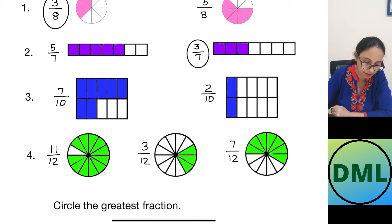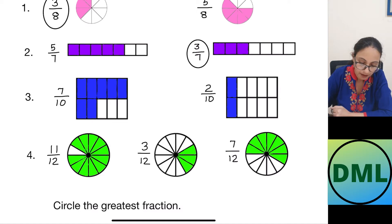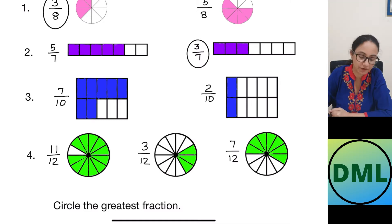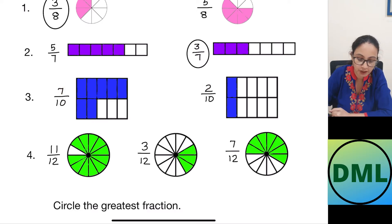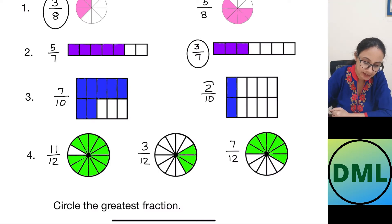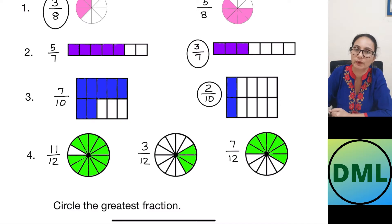Now let's see one more example. This is 7 by 10 — out of 10 parts, 7 parts are shaded. And here out of 10 parts, 2 parts are shaded. Now which is my smallest fraction? The denominator is the same as 10. Then we look for the numerator: it is 7 here and 2 here. So which one is smaller? 2. So 2 by 10 is my smallest fraction out of 7 by 10 and 2 by 10.